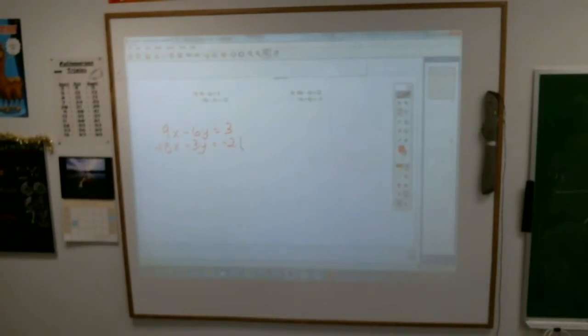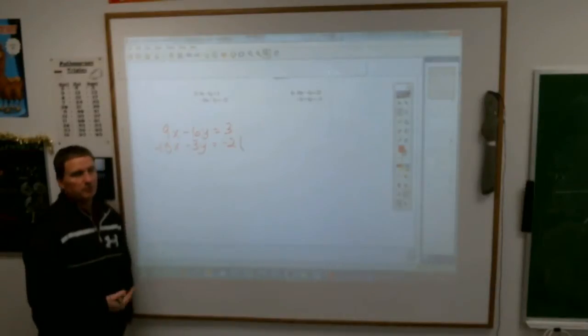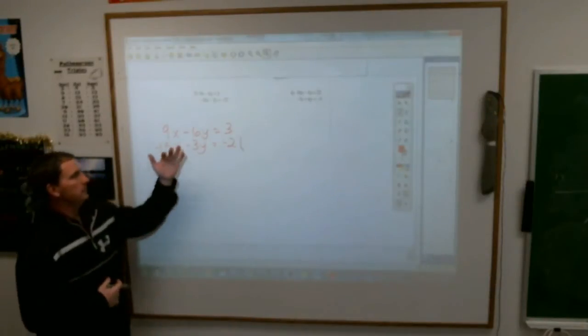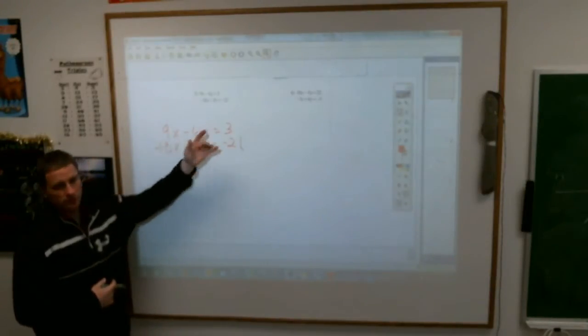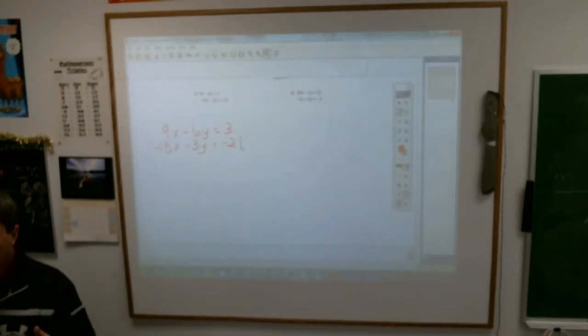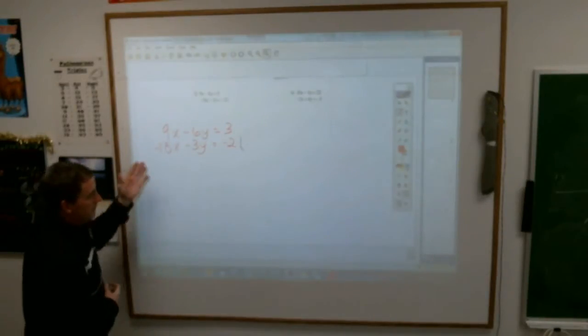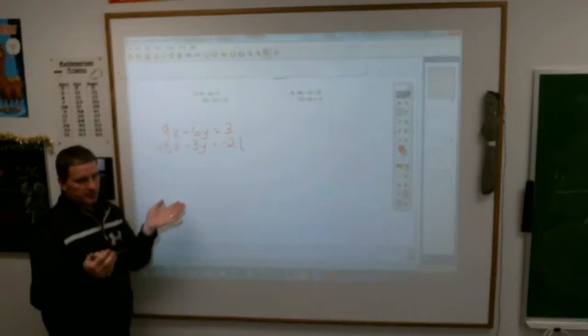If you look at this as it stands, none of the numbers match up. In other words, I don't have two sixes or two threes or two just letters here. So here's where you have to use a little bit of logic or common sense. You need to make two of the numbers the same.